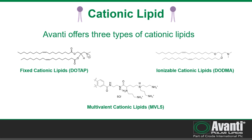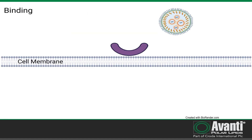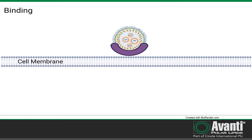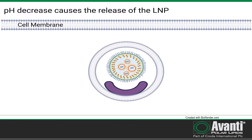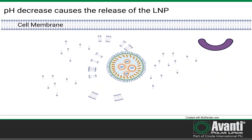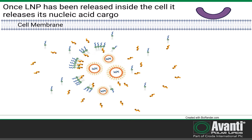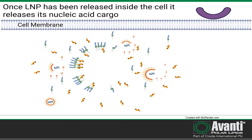Both cationic lipids and pegylated lipids can be customized for a specific formulation or system. Once formulated, the LNP is injected and can enter the cell by endocytosis. The endosome has an acidic environment below the pKa of the cationic lipid, resulting in protonation. The positive charge promotes electrostatic interactions within the endosomes, believed to be the mechanism by which the nucleic acid is released into the cytoplasm. Now the LNP's job is complete, and the lipids are easily eliminated by the body through natural processes.